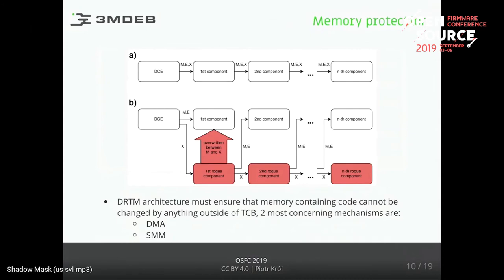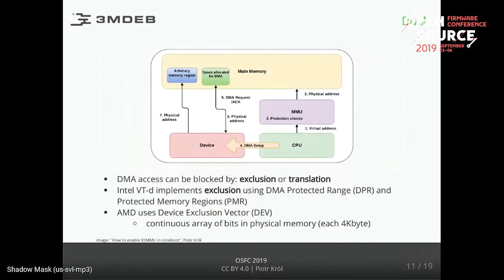It may happen in some corner-case situation where we've measured and extended the component, but when we try to execute it, something like DMA or SMM caused execution of a rogue component. Despite having correct measurements and correct PCR extensions, we're running a rogue component because of manipulation through DMA or SMM. Because of that, DRTM will not work, and we have to protect ourselves against DMA attacks.